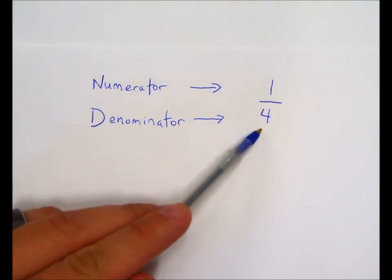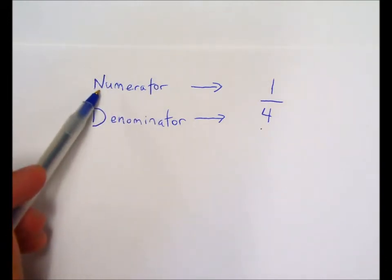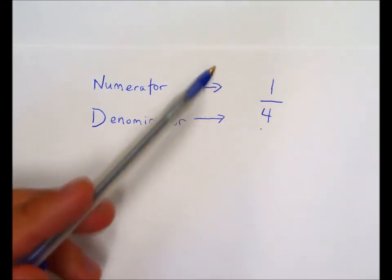Well, the denominator tells us how many pieces, how many equally sized pieces, our whole thing is divided into. Our numerator refers to how many of those pieces that we have at any given time.